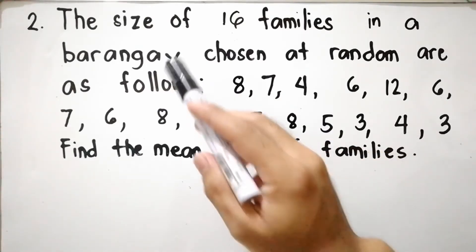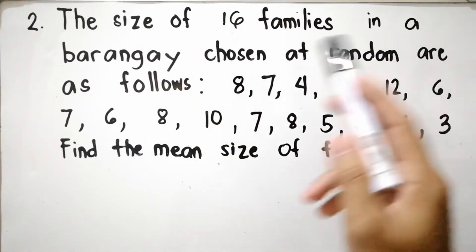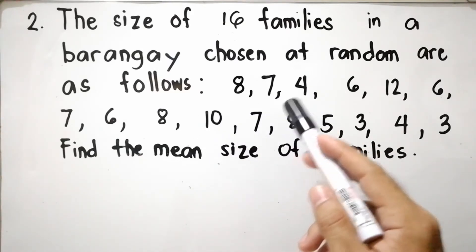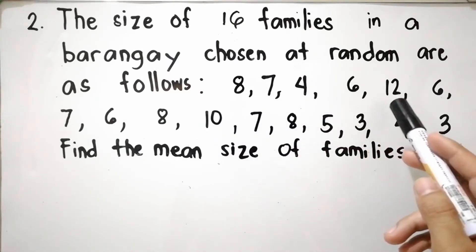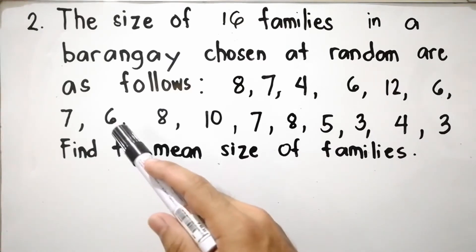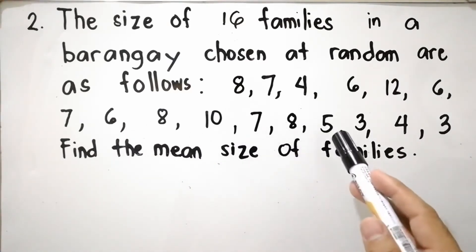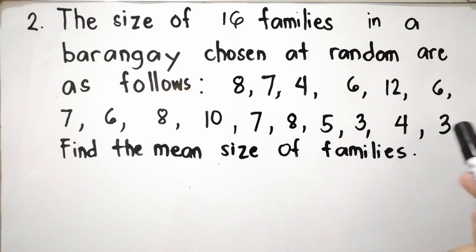Let us have example number 2. The size of 16 families in a barangay chosen at random are as follows: 8, 7, 4, 6, 12, 6, 7, 6, 8, 10, 7, 8, 5, 3, 4, and 3. Find the mean size of the families.